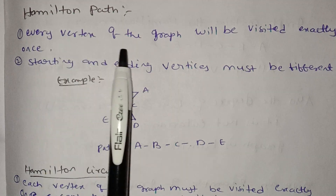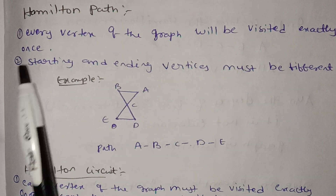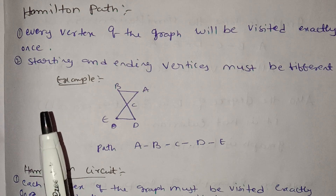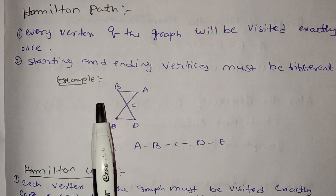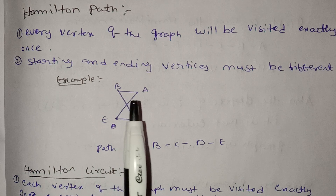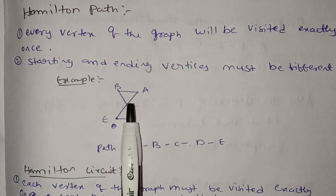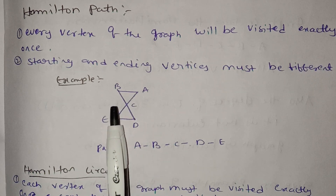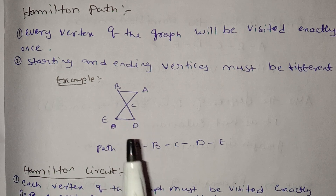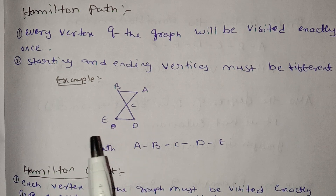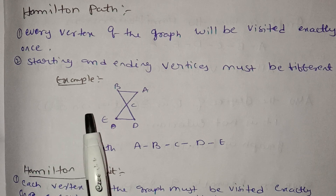Hamilton path: every vertex of the graph will be visited exactly once. In a Hamilton path, we focus on the vertex — each vertex is visited only once. Edges may be traversed when connecting the vertices.